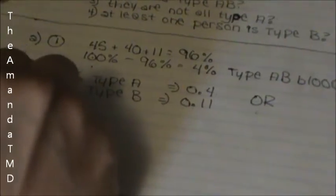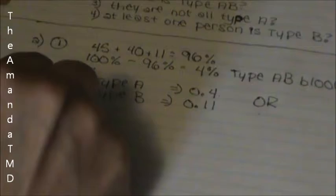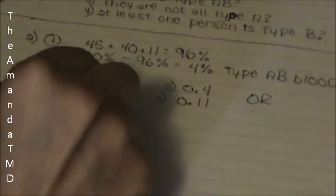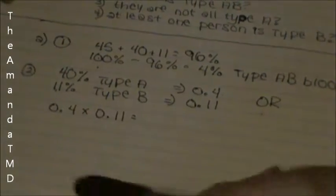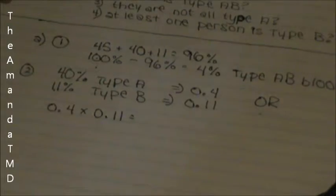In order to find out, for part 2, I would do 0.4 times 0.11, which gives me 0.044.